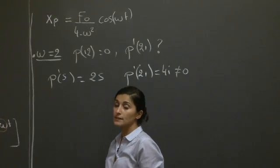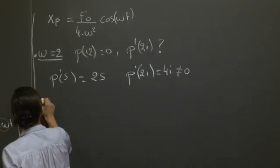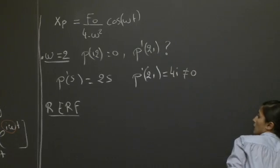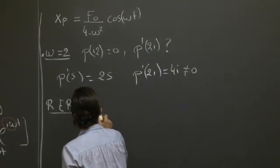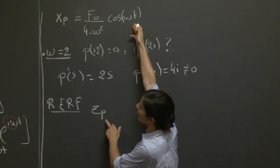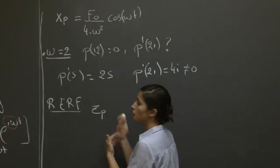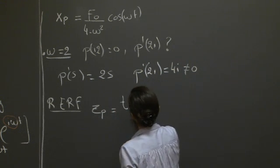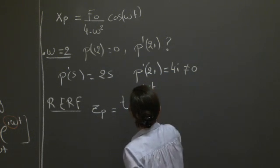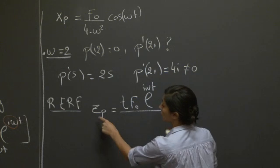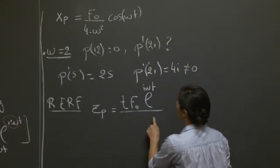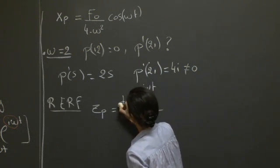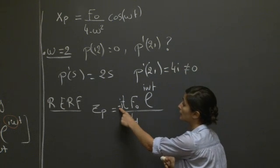So at this point, we can use the resonant exponential response formula that you saw. So I'll just check my chalk, where here we would again, same trick, the cosine is just the real part of the exponential, so we can use this formula. And we have now to introduce a t f0 exponential i omega t, because we're solving here for the complex value equation, and now we can divide by the p prime evaluated at 2i, which is 4i.